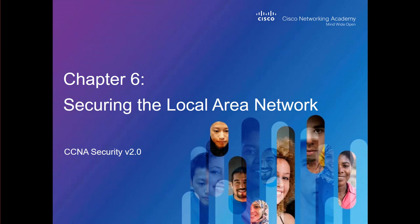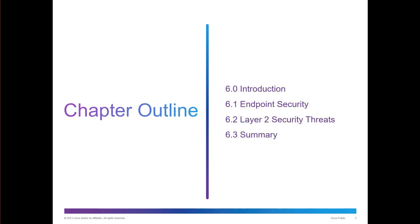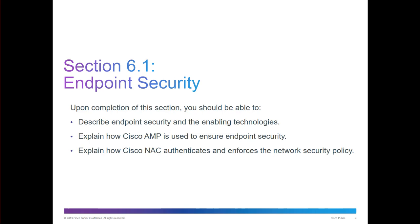Welcome to my CCNA Security Lecture Review. Here we're looking at Chapter 6, Securing the Local Area Network. The outline is Endpoint and Layer 2 Security. We're going to be looking at describing Endpoint Security and enabling those technologies, explaining how Cisco AMP is used, and explaining how Cisco NAC authenticates and enforces specific security policies.